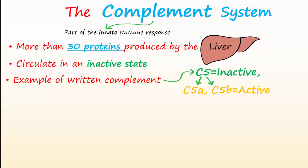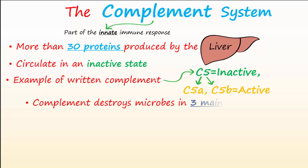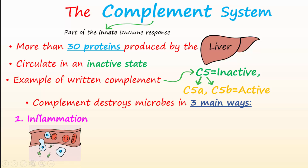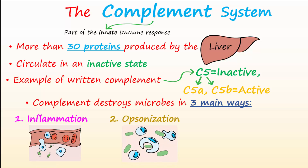For instance, when C5 is activated, it splits into C5A and C5B. The complement system is activated by way of a cascade, where one activated complement protein triggers the activation of another and then another. With each successive reaction, more complement is formed and the signal is amplified. Activated complement assists to destroy microbes in three main ways.